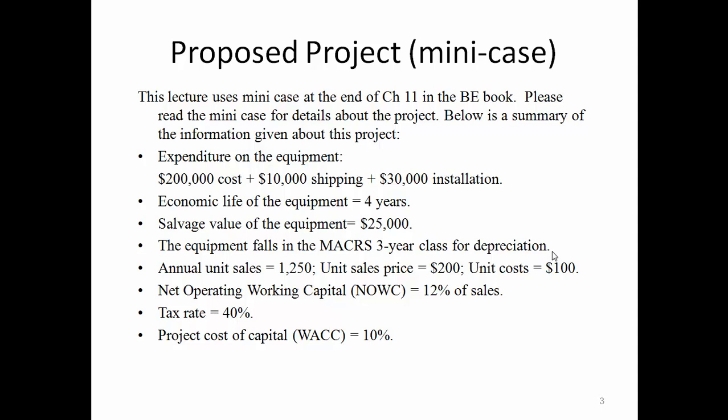Expenditure on the equipment is $200,000, which is the cost to purchase the equipment. There is also a $10,000 shipping cost and $30,000 expense for installation. The economic life for the equipment is 4 years, so we are looking at a 4-year project. At the end of the 4th year, when you wrap up the project and sell the equipment, you can receive a $25,000 salvage value. The equipment falls in the MACRS 3-year class for depreciation.